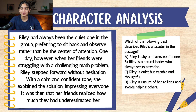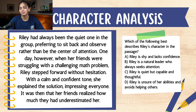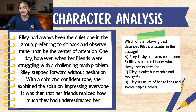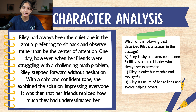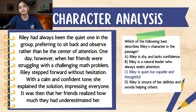Question 5: character analysis. Raleigh had always been the quiet one in the group, preferring to sit back and observe rather than be the center of attention. One day, however, when her friends were struggling with a challenging math problem, Raleigh stepped forward without hesitation. With a calm and confident tone, she explained the solution, impressing everyone. It was then that her friends realized how much they had underestimated her. Which of the following best describes Raleigh's character? A. Raleigh is shy and lacks confidence. B. Raleigh is a natural leader who always seeks attention. C. Raleigh is quiet but capable and thoughtful. D. Raleigh isn't sure of her abilities and avoids helping others. If you said C, Raleigh is quiet but capable and thoughtful, you are correct.